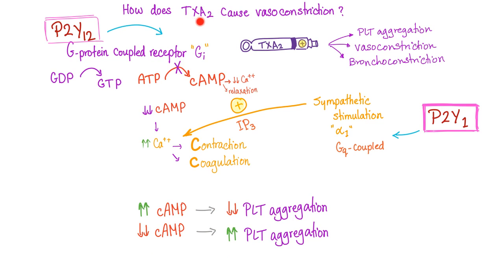As covered in my video about thromboxane A2 and prostacyclin, thromboxane A2 acts via a Gi-protein-coupled receptor, inhibiting adenylate cyclase so there's no cyclic AMP. No cyclic AMP means more calcium, and calcium drives coagulation. So increased cyclic AMP equals decreased platelet aggregation; decreased cyclic AMP equals increased platelet aggregation.